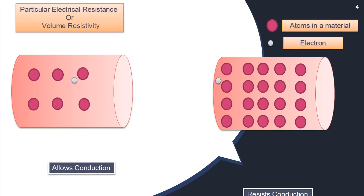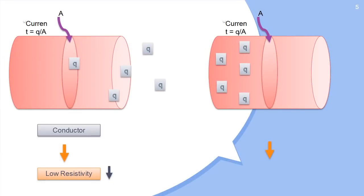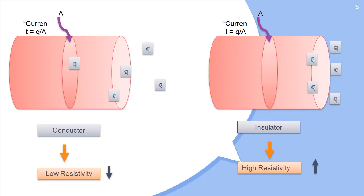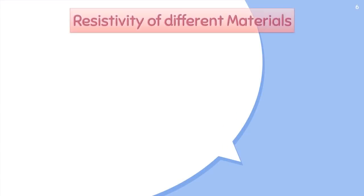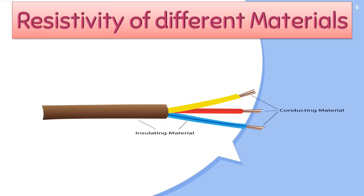Materials that conduct electrical current easily are called conductors and have a low resistivity. Those that do not conduct electricity easily are called insulators and these materials have a high resistivity. The resistivity of different materials plays a major role in selecting materials used for electrical wire, within electronic components including resistors, integrated circuits, and many more.